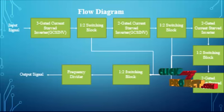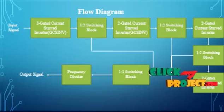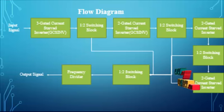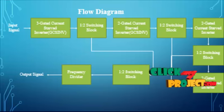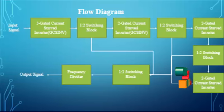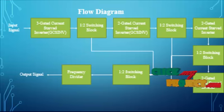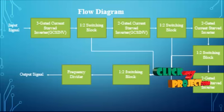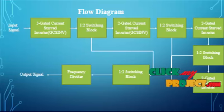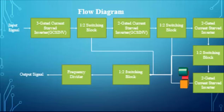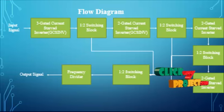First, the input signal is applied into three gated current starved inverters, and then directly applied into the one-to-two switching block. In this switching block, they select the output based on the input value — zero or one. If the input value is zero, it is directly applied into two gated current drive inverters. If the switching block output is one, it is applied into another switching block.